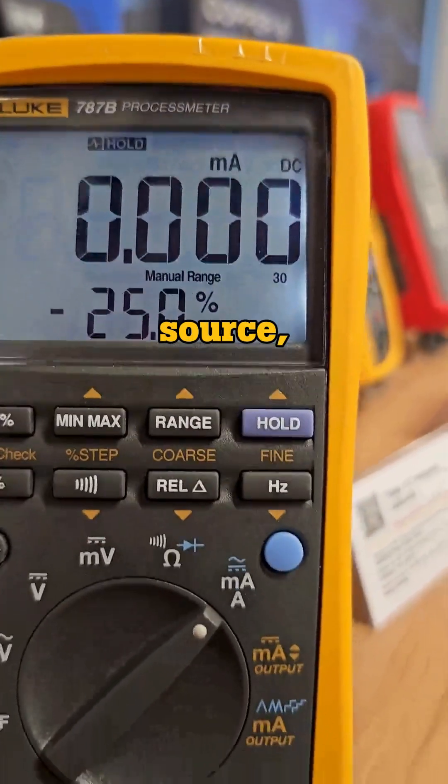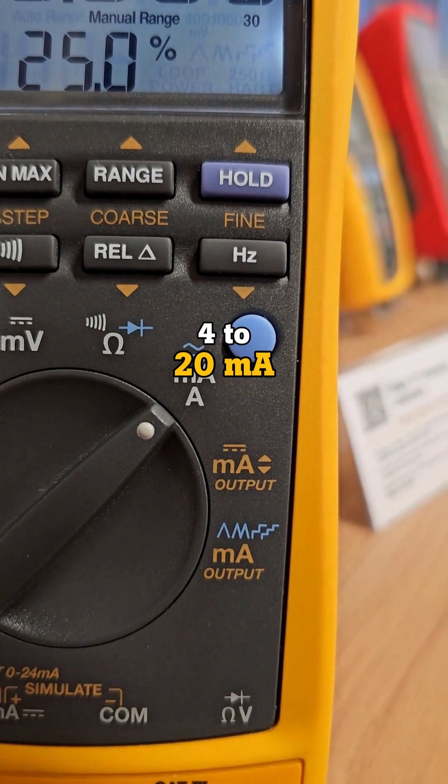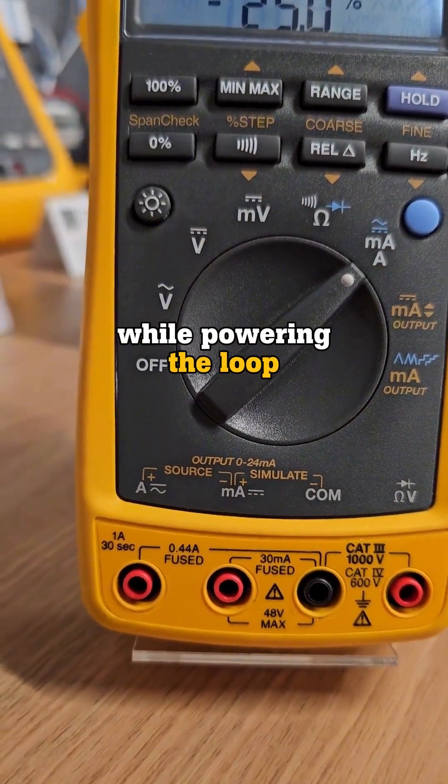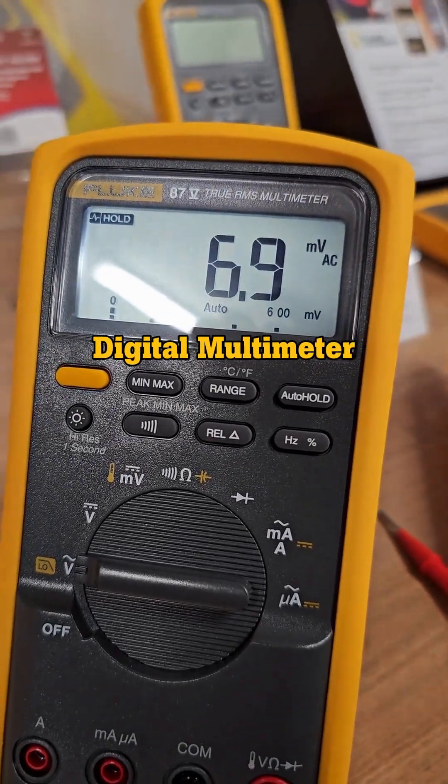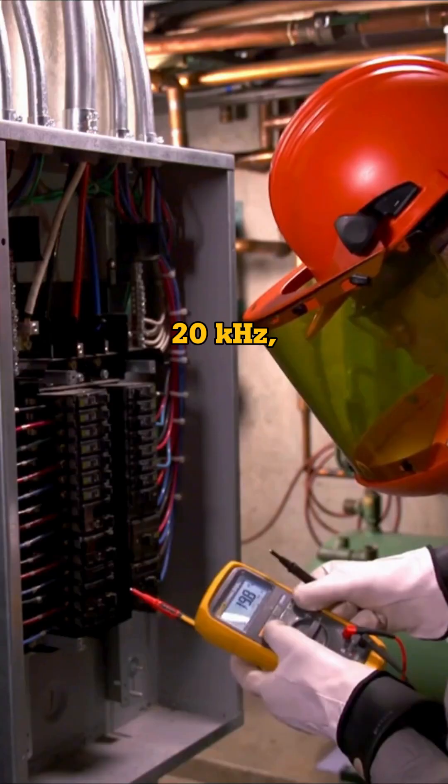These tools help you measure, source and simulate 4-20 milliamp DC current while powering the loop, alongside all the measurement capabilities of the Fluke 87V digital multimeter, including frequency measurement to 20kHz.